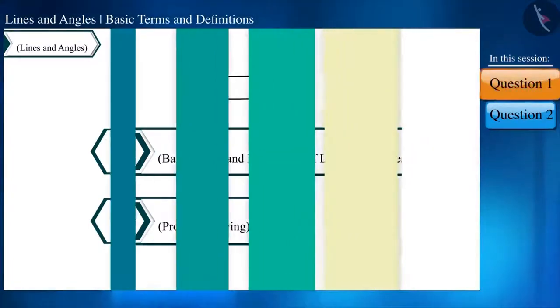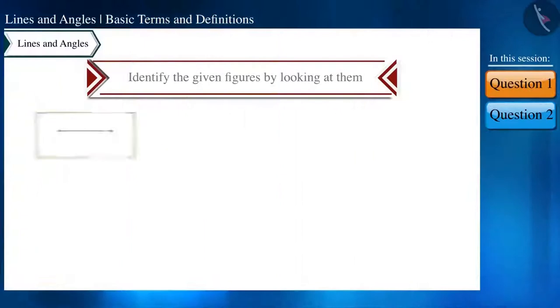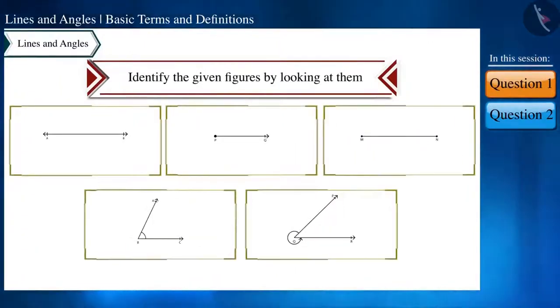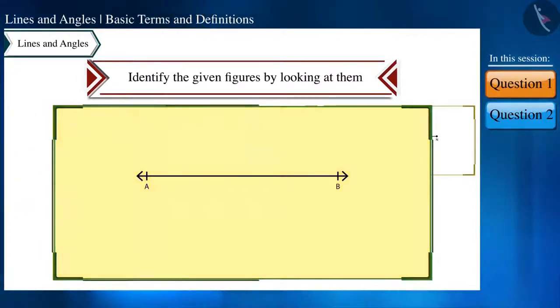Let's start with our first question. Identify the given figures by looking at them. Look at the first figure. Here, on both the sides, there is a symbol of an arrow. And this shows that it can be extended further in both directions. Therefore, this is a line.